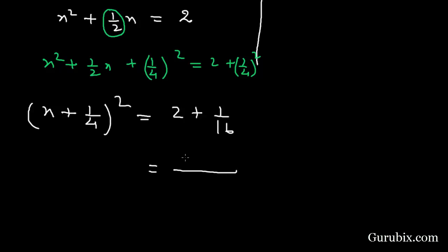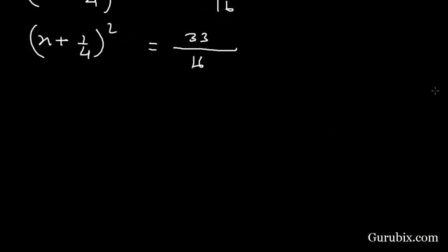Here we have (x + 1/4)² = 33/16. This means x + 1/4 equals plus or minus the square root of 33/16, which equals ±√33/4.